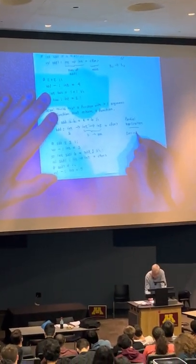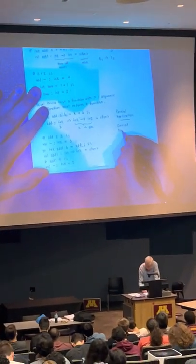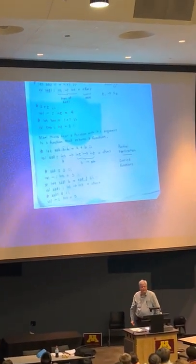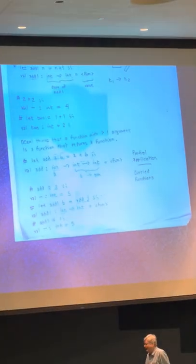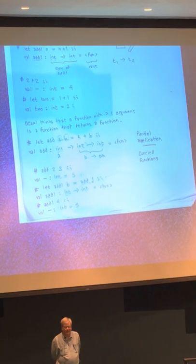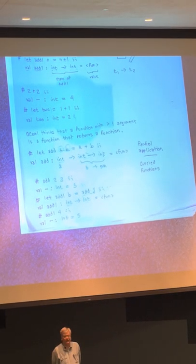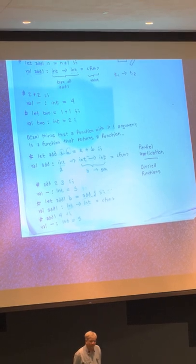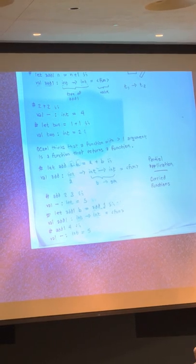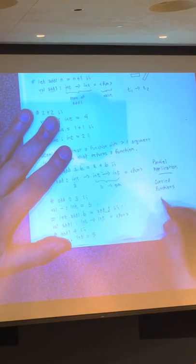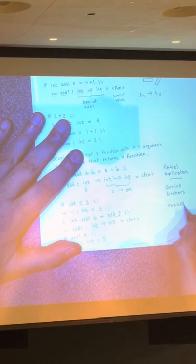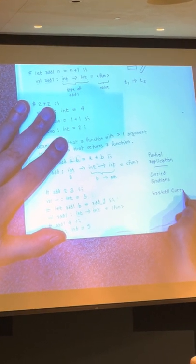Some people call these curry functions, and this is sort of a lame joke that refers to, like a dish you might order in a restaurant, curry chicken, for example. Well, if we can have curry chicken, maybe we can have curry functions. Why is it called that? Because this sort of thing was invented by a mathematician, Haskell Curry.